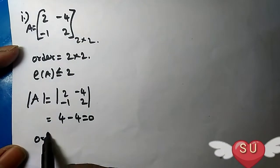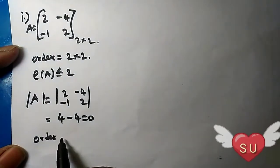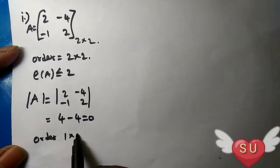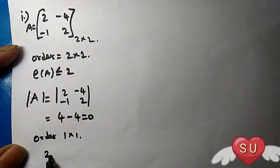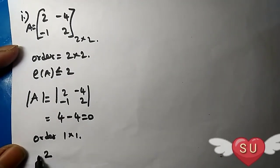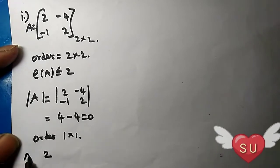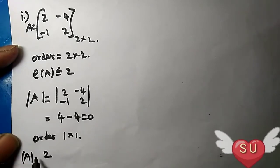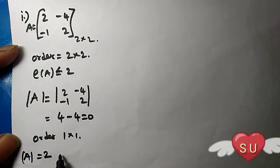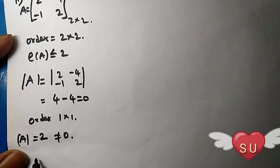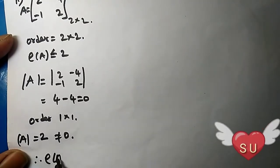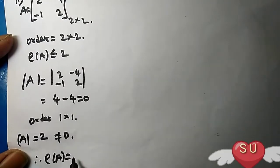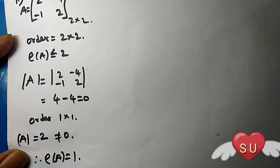the next order 1 will be equal to 1. So, order 1 into 1 matrix — the first element will be equal to 2. Here I am going to show you how to raise it to not equal 0. Therefore, rank of y is equal to 1.